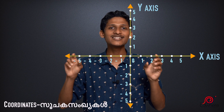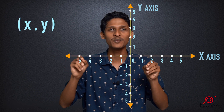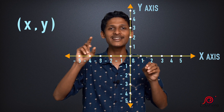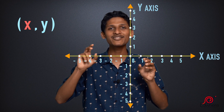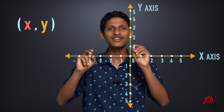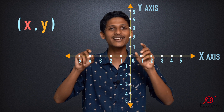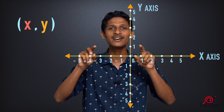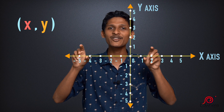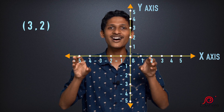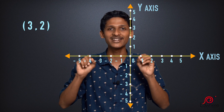What does Cartesian coordinate mean? A Cartesian coordinate is written in a bracket. In the bracket, the first value is the x value and the second value is the y value — x value first, y value second. If there are two values, you write them in a bracket. This is the Cartesian coordinate.